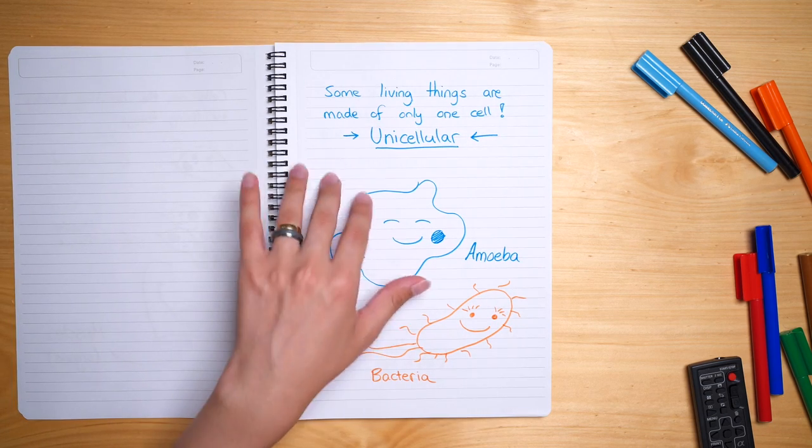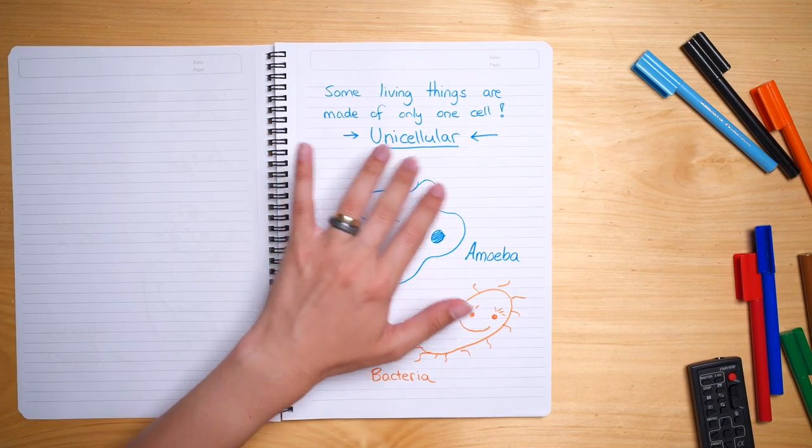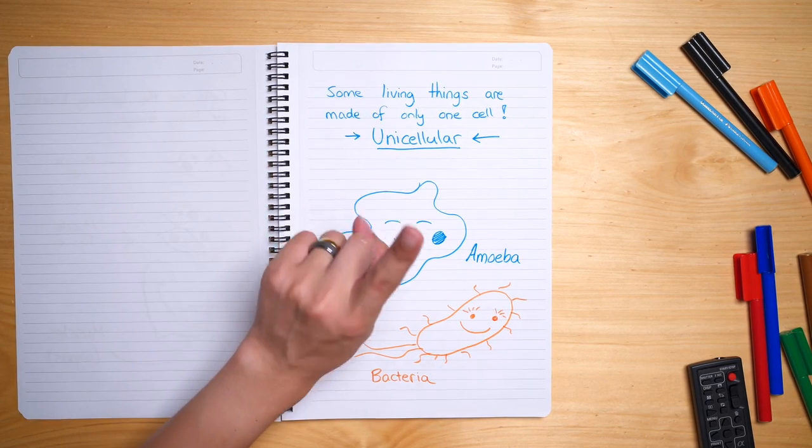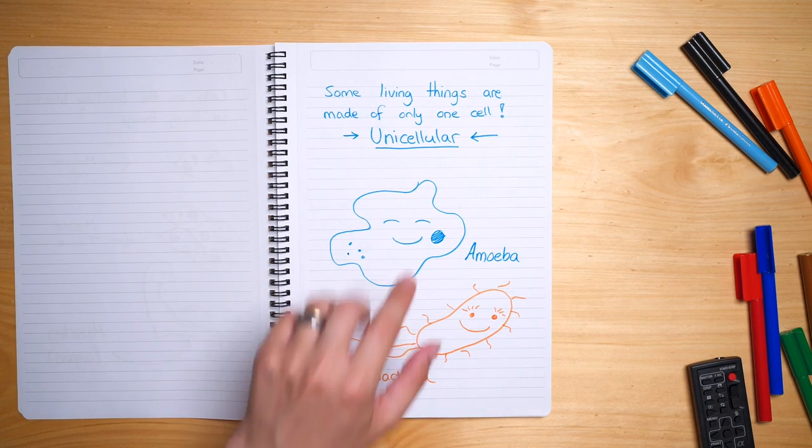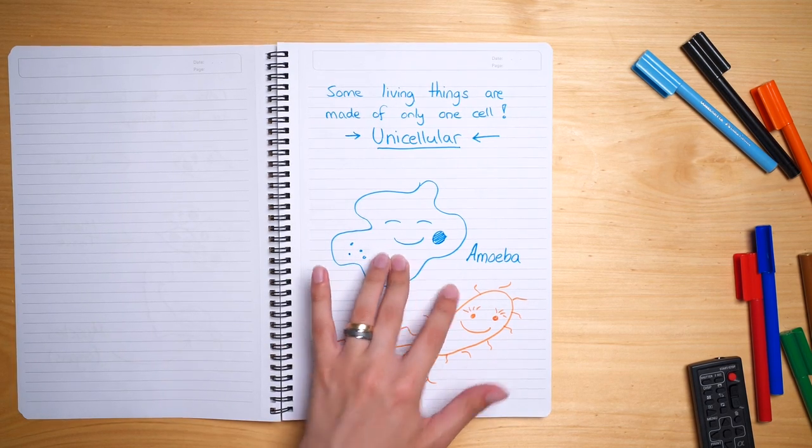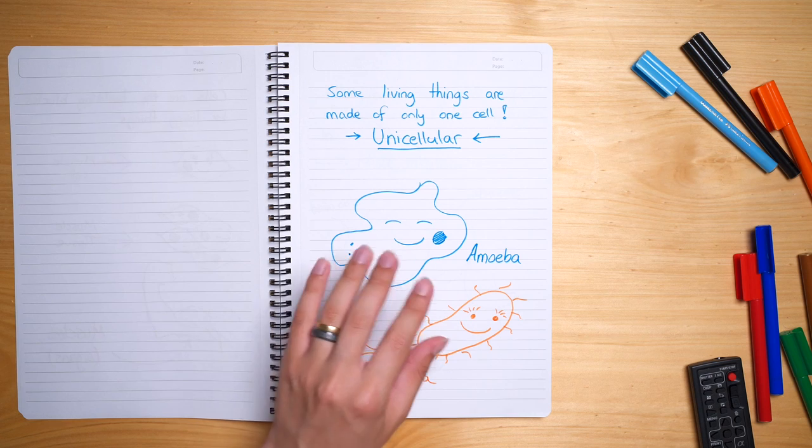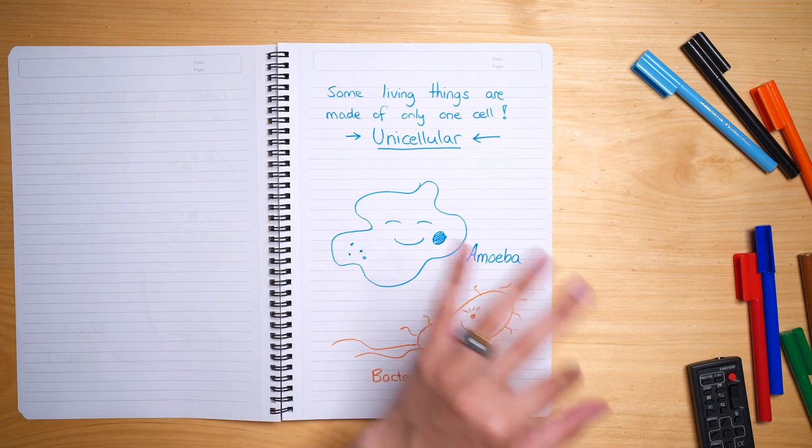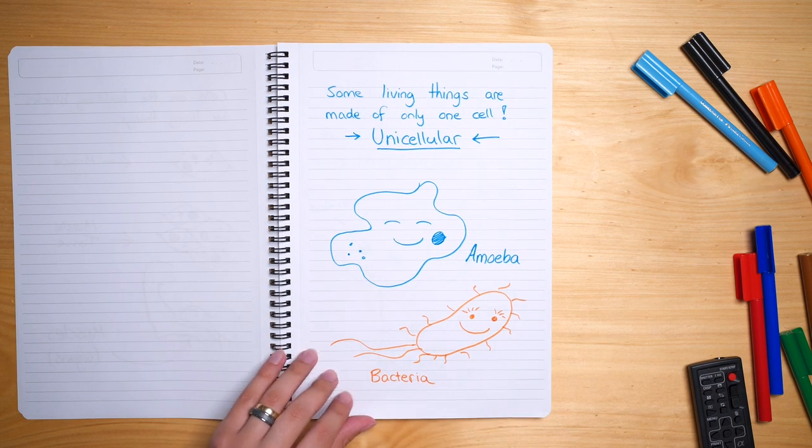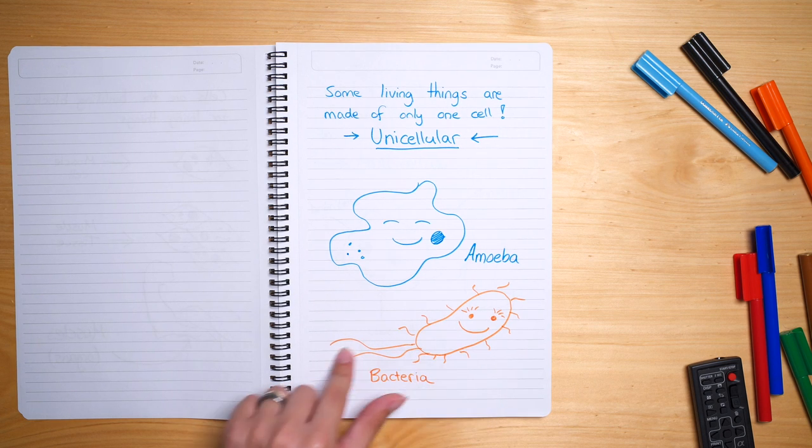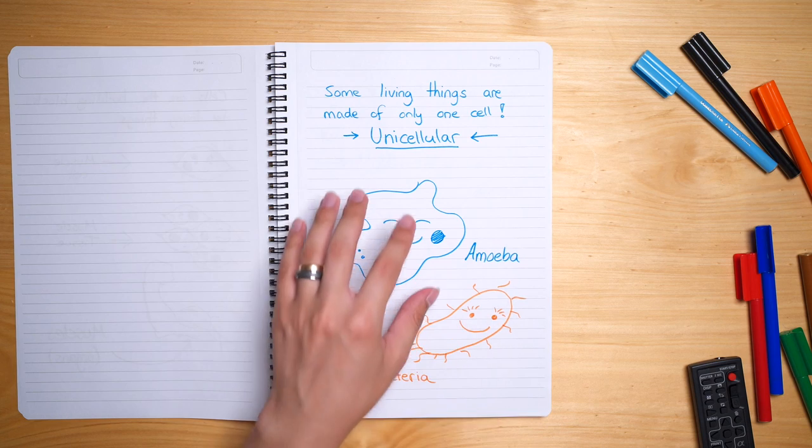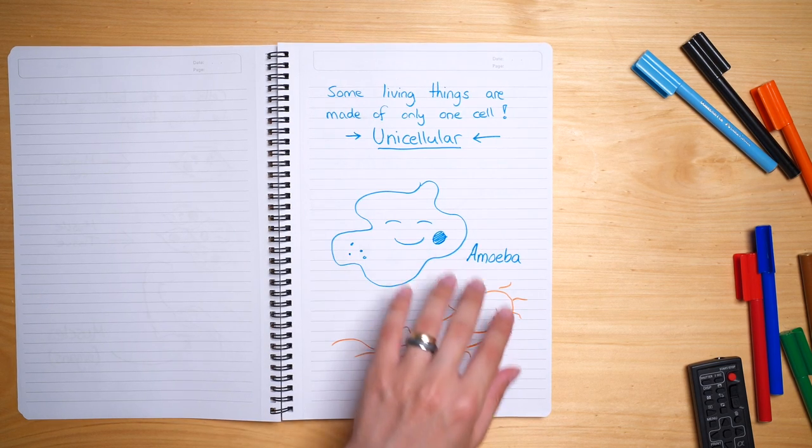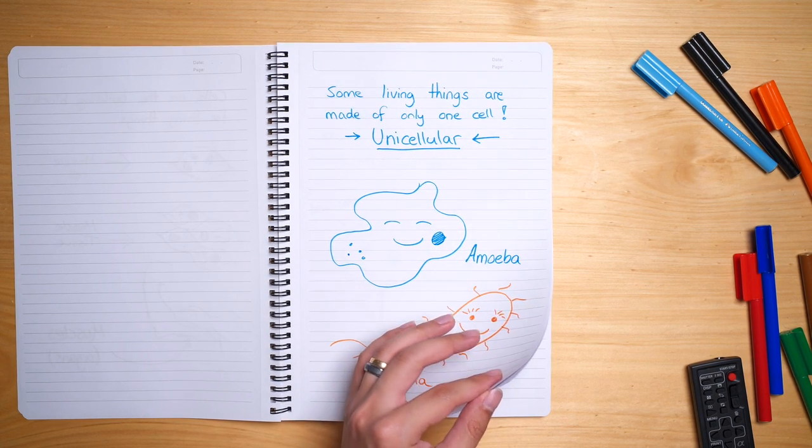Some living things are made of only one cell and we call them a unicellular organism. Uni meaning singular or one and cellular meaning a cell. I've got two examples here. I've got an amoeba, tends to swallow things, very cute to see underneath the microscope, swims very fast. And we've also got things like bacteria. It has got a bit of hairs on its surface and some tails to help it swim across. So those are two examples of a living thing. That's a living thing, that's also a living thing, but only one cell.